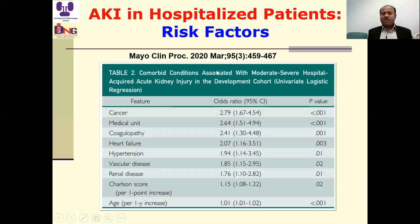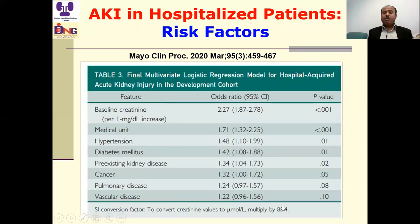A recent article shows that cancer is associated with a 2.7-fold increase in AKI risk. Other risk factors include admission to a medical unit, coagulopathy, heart failure, hypertension, vascular disease, pre-existing renal disease, and increasing age. In the development cohort, each 1 mg/dL increase in baseline creatinine was associated with a 2.2-fold increase in AKI occurrence. Be careful about risk factors.